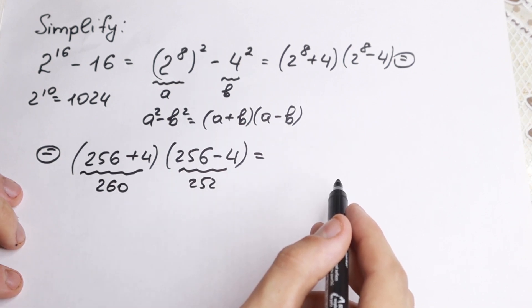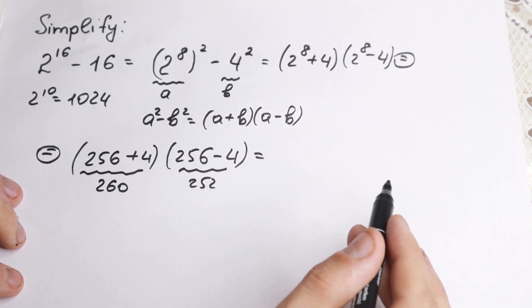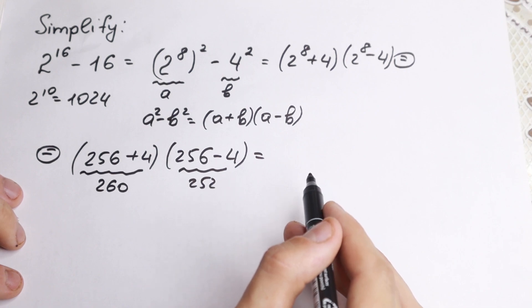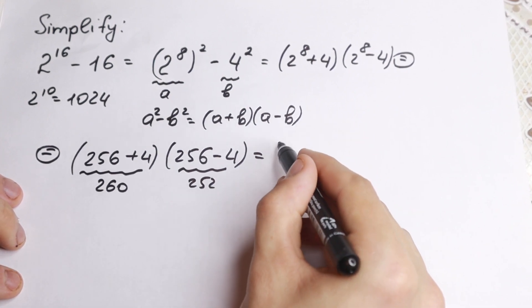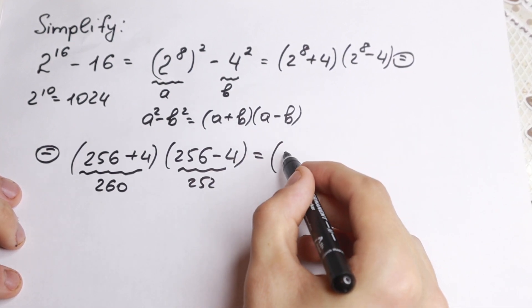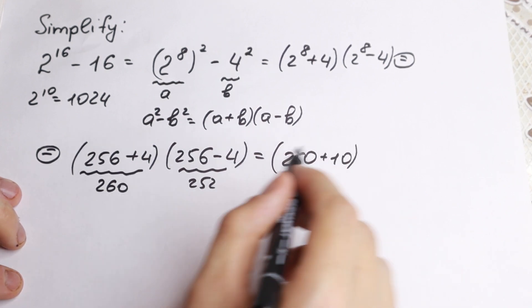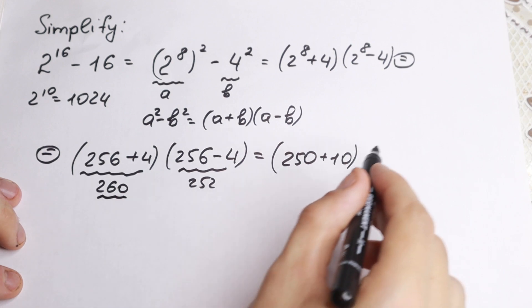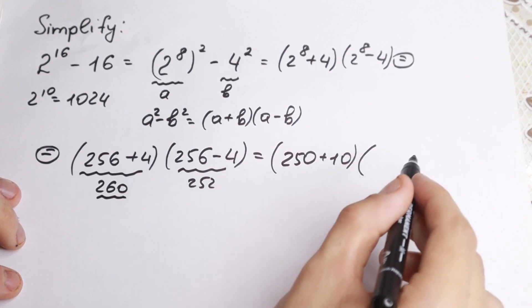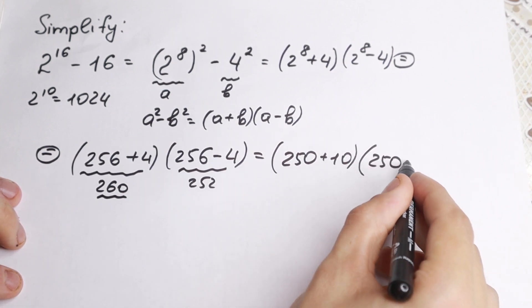How can we work with this? How can we multiply it without the boring math method that we learned at school? We can write it as two parentheses. First of all, we have 250 plus 10. Let's write this 260 in this way, and second times 252 as 250 plus 2.